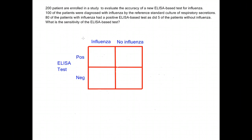I have a hypothetical study in which 200 patients are enrolled to determine the accuracy of a new ELISA-based test for influenza. 100 of the patients were diagnosed with influenza by the reference standard culture of respiratory secretions. 80 of the patients with influenza had a positive ELISA-based test, as did five of the patients without influenza.